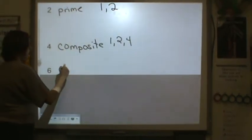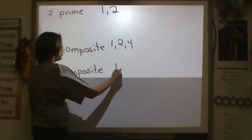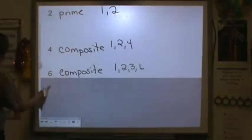6 is composite. Its factors are 1, 2, 3, and 6. It has more than two factors, so it's composite.